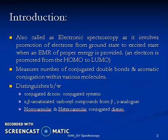Electronic spectroscopy measures the number of conjugated double bonds and aromatic conjugation within molecules, giving detailed information about the kinds of bonds involved. As bonding increases from single to double to triple bonds, the electronic configuration increases, and such molecules respond more strongly to UV spectroscopy. When aromaticity or conjugation increases, those molecules can be studied in greater detail. This technique can distinguish between conjugated and non-conjugated systems and differentiate various kinds of unsaturation in a molecule.